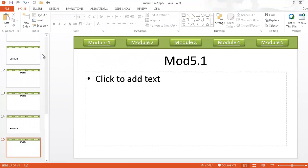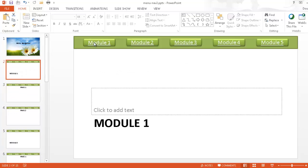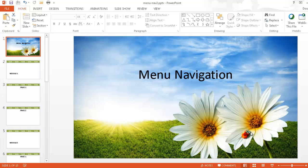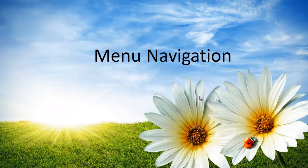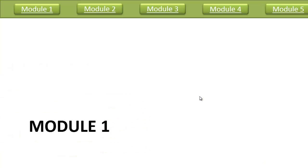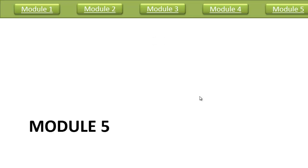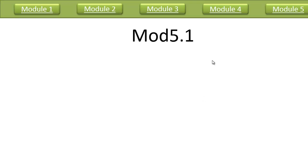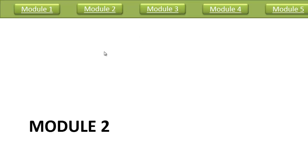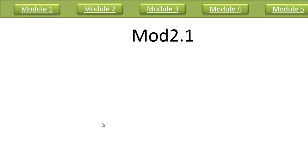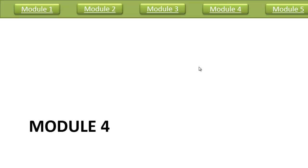Now the slides have navigation in them. Let me go into Slideshow mode to test it. I go through Module 2, 2.1, 2.2, then 3, 3.1, 3.2, 4, 4.1, 4.2, and 5. If I get a question about Module 2, I click Module 2 in the nav bar and it takes me there. Then if I have a question about Module 4, I click Module 4 and go there. That's our navigation up top.